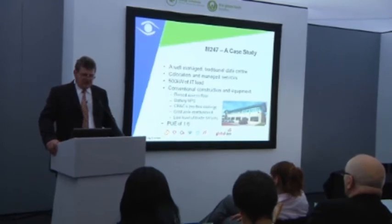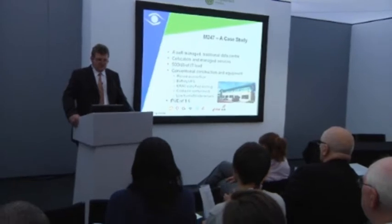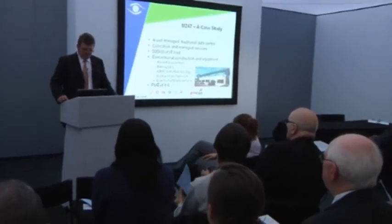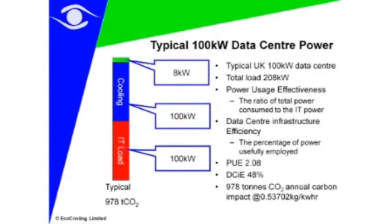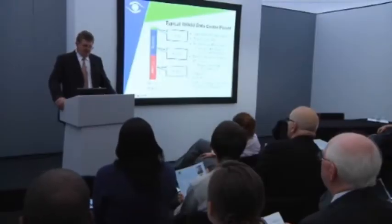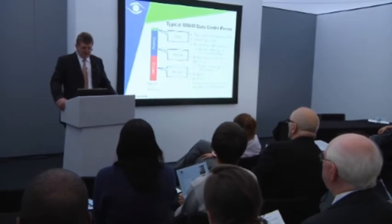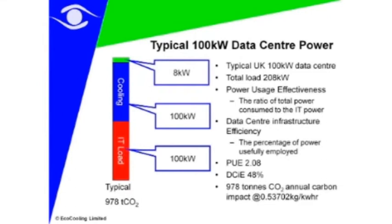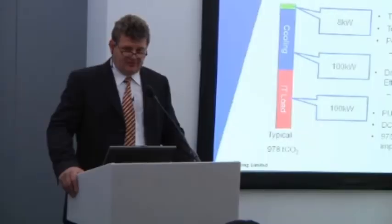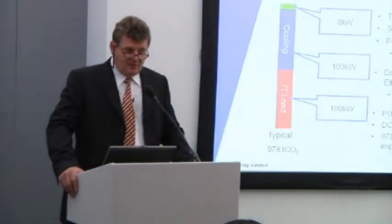They're running at a very good level of efficiency for that type of data center — what we call a PUE, a Power Utilization Effectiveness. PUE is a very important concept: we look at the efficiency of a data center and its energy use by looking at the ratio between the total energy used against what's really useful work done in the IT equipment. Many data centers in Britain run at a PUE of anything up to 2.5.